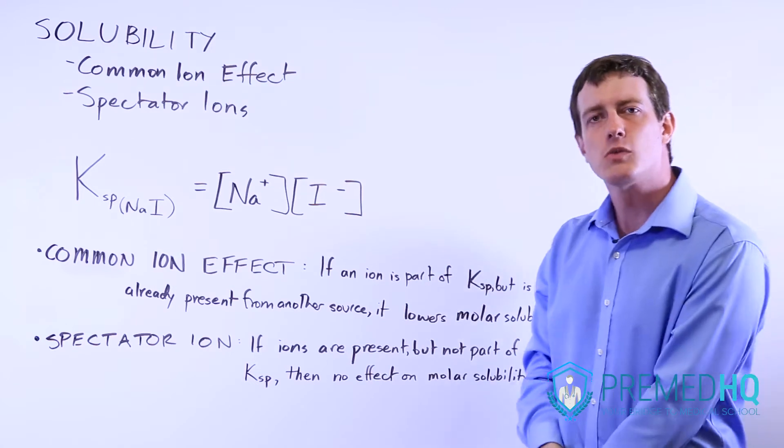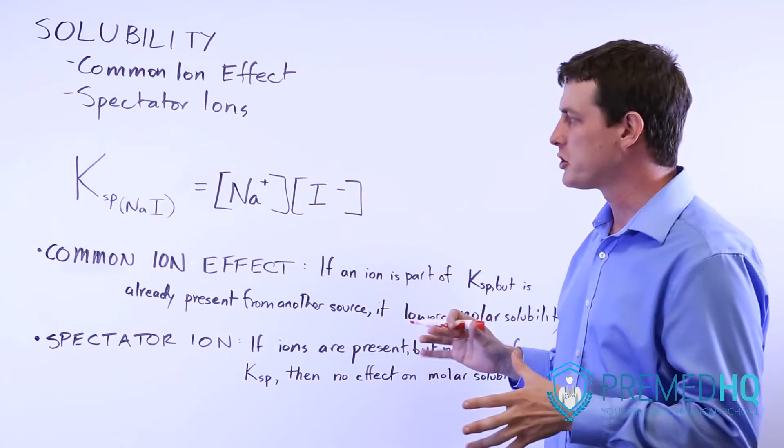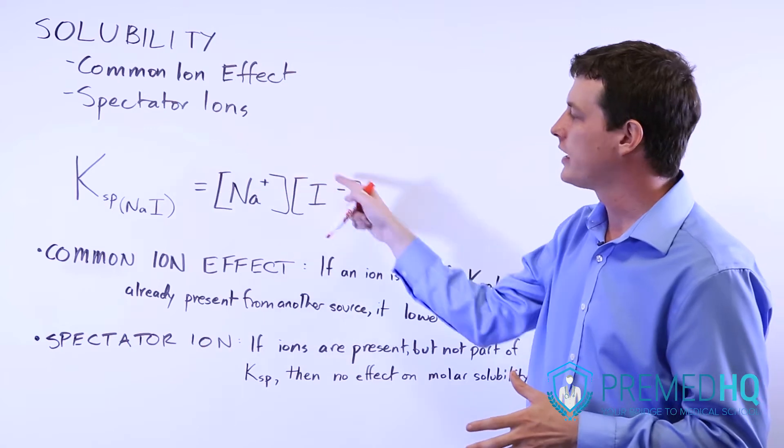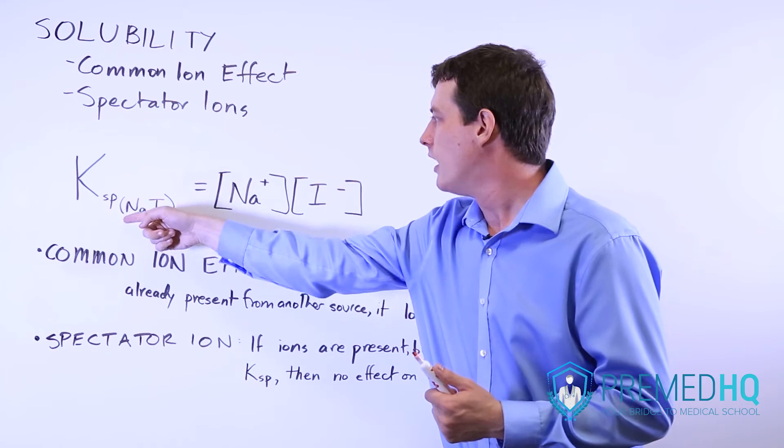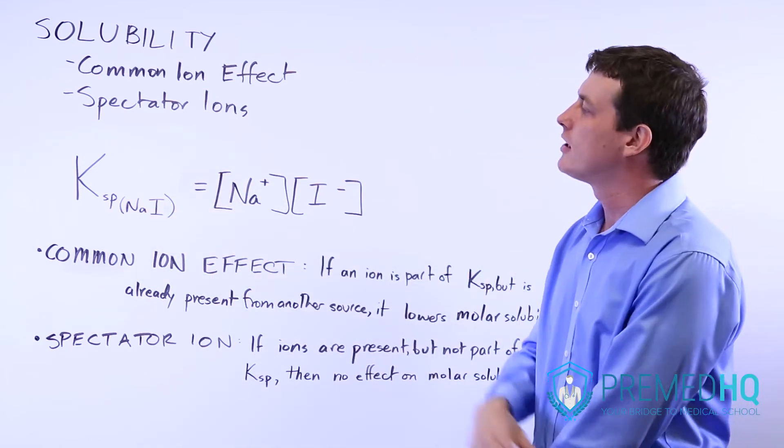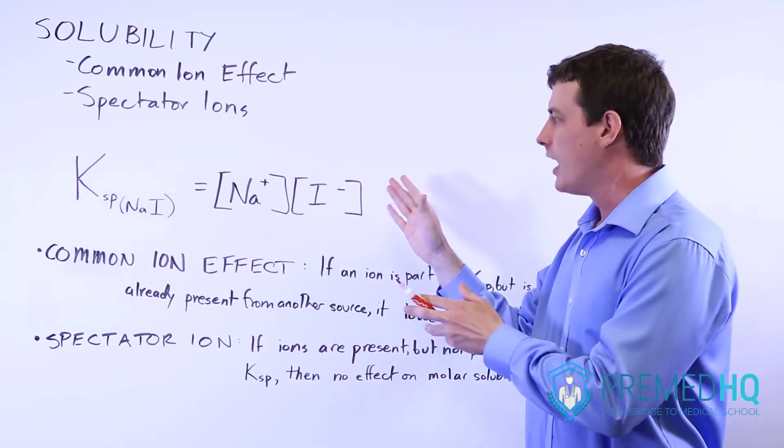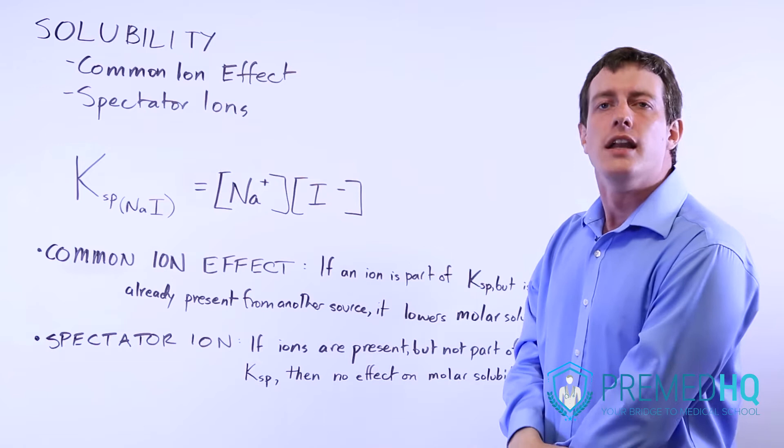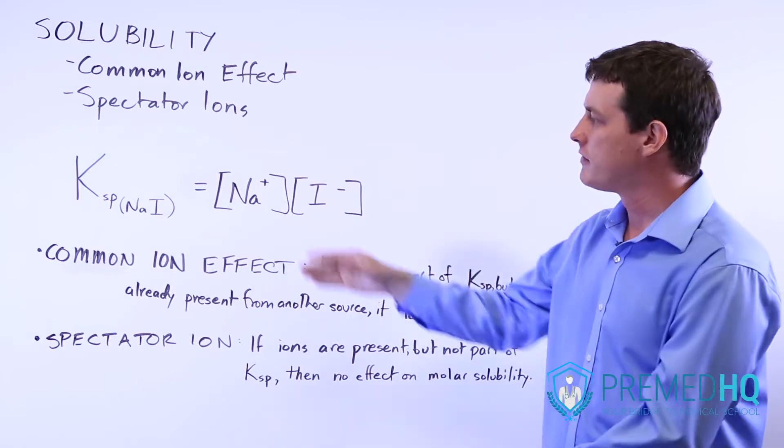And the way that this works is if there are already ions present in your solution that are part of the KSP equation. So here we have the KSP, the solubility product of sodium iodide, NaI. And if there are already some sodium ions or some iodide ions in there, then you will see a reduction in the molar solubility of sodium iodide.